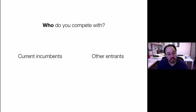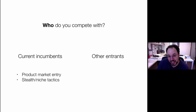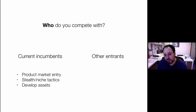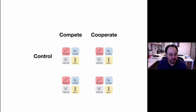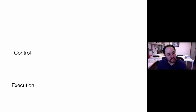Who do you compete with? You can compete with current incumbents or other entrants. If you want to compete with incumbents, you're thinking about entering the product market in a disruptive fashion — stealth or niche market entry — so you don't get clobbered. You need to develop your own assets: your own distribution, regulation, and expertise. When competing against other entrants, you'll pursue a licensing or acquisition strategy with incumbent firms, allowing you to scale quickly by leveraging their resources through partnerships. We call that competing versus cooperating. So that gives you two dimensions: control versus execution, and compete versus cooperate — four boxes, four interesting business strategies.